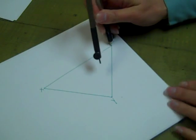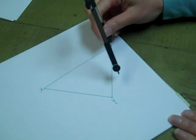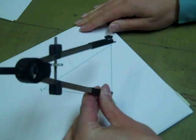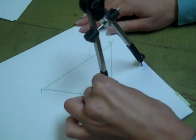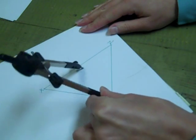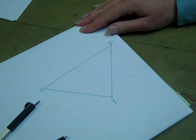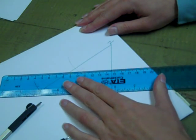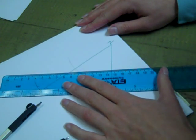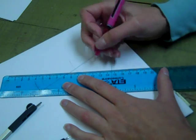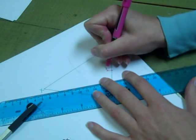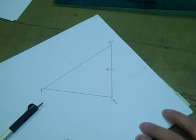I'm putting my pointer on Z, making sure my compass is open more than halfway, arcs above and below, put my pointer on Y, arcs above and below, and then I'm going to use my ruler to line up my intersection points. And again, I only need to know where the midpoint is, and so I will label that point M.